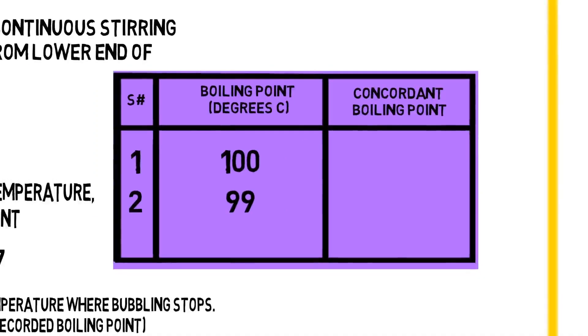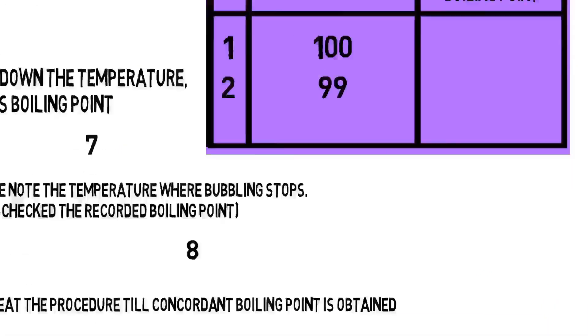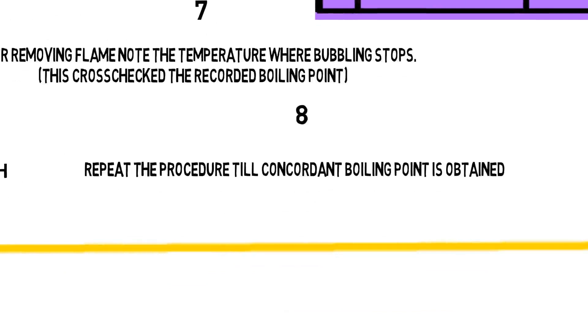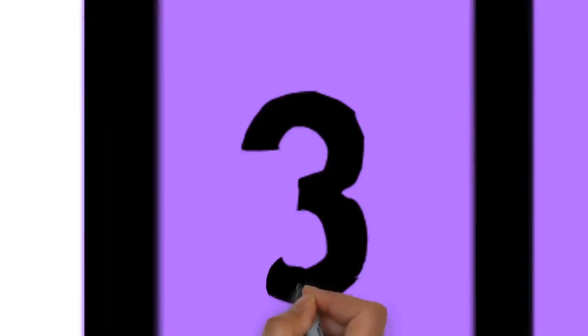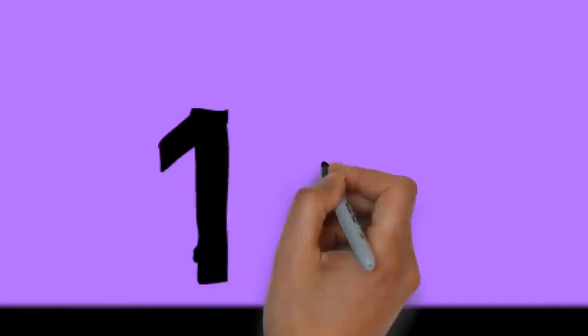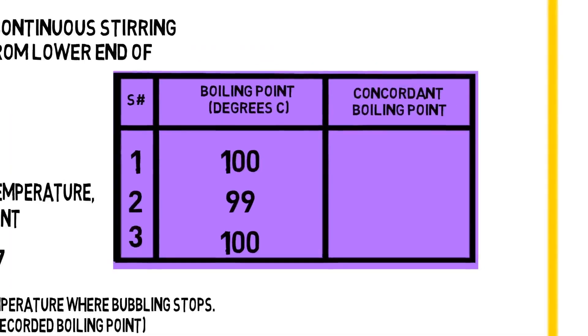Observation two: ninety-nine degrees centigrade. Observation three: hundred degrees centigrade.